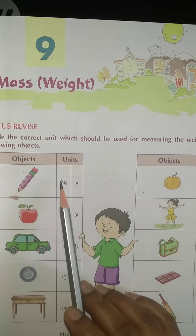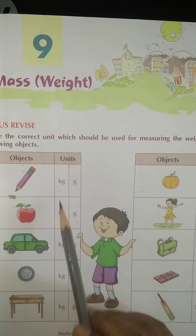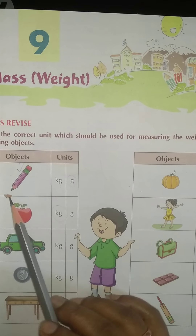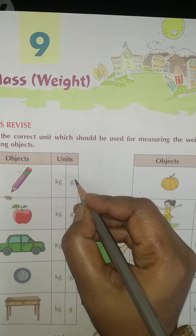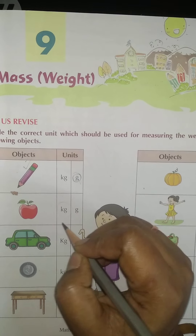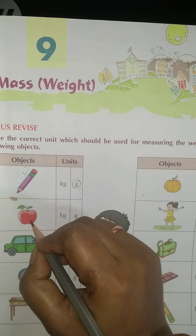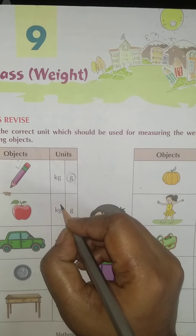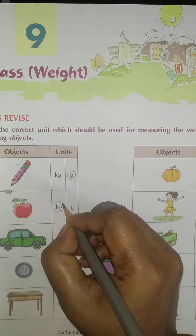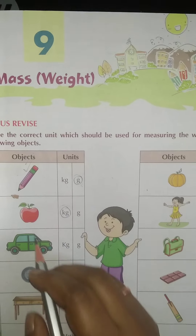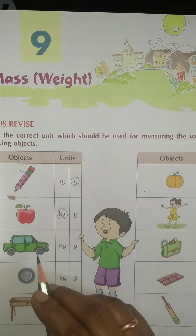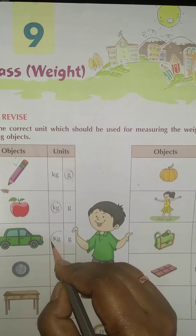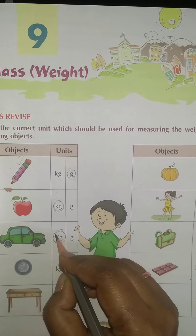You can see a picture of a pencil. Whenever it is measured, is it kg or g? Since it is a light-weight object, it is measured in gram. There is also a picture of an apple, and that is measured in kg.